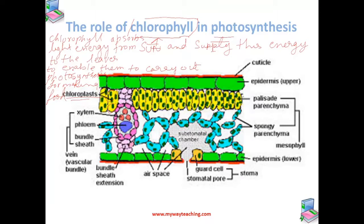Basically, chlorophyll acts as an energy provider, trapping energy from sunlight. Also in this figure you can see xylem — we talked about xylem because it carries water from the roots to the leaves, which is required during photosynthesis.